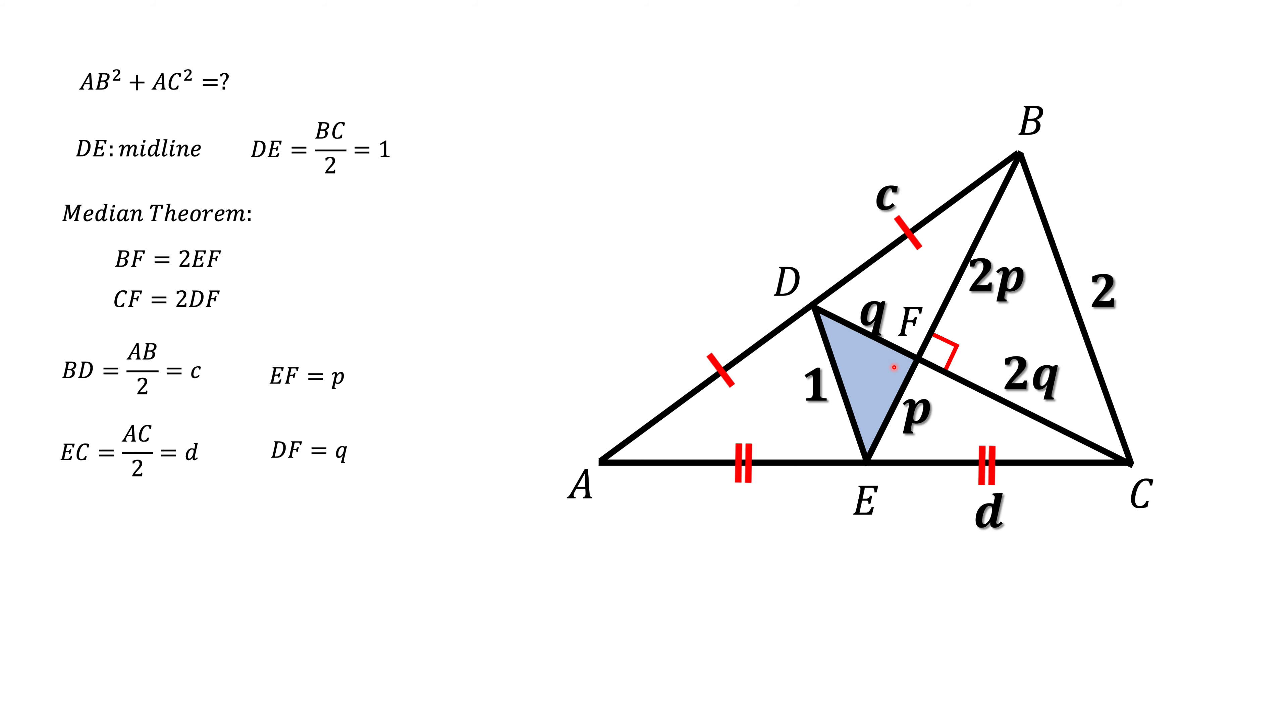First of all let's look at this blue one. This is a right triangle, so we can apply Pythagorean theorem here, so P squared plus Q squared should be equal to 1.